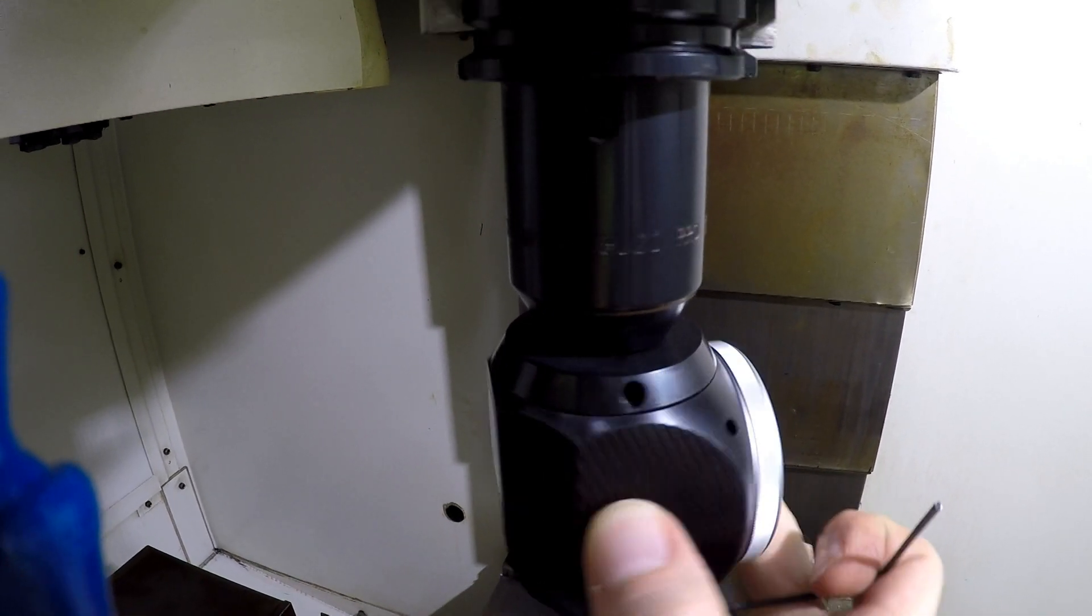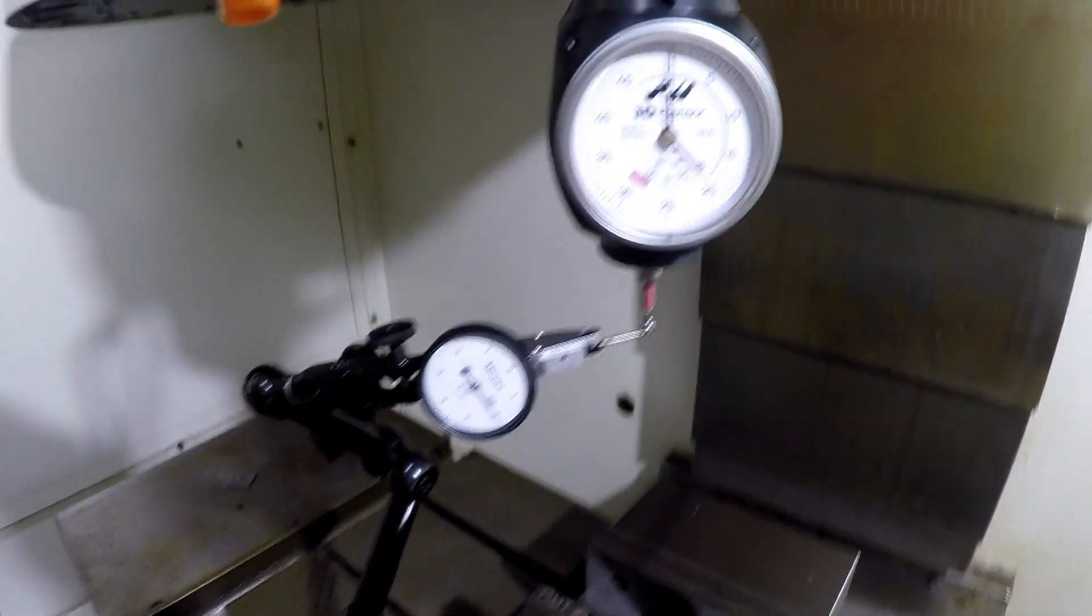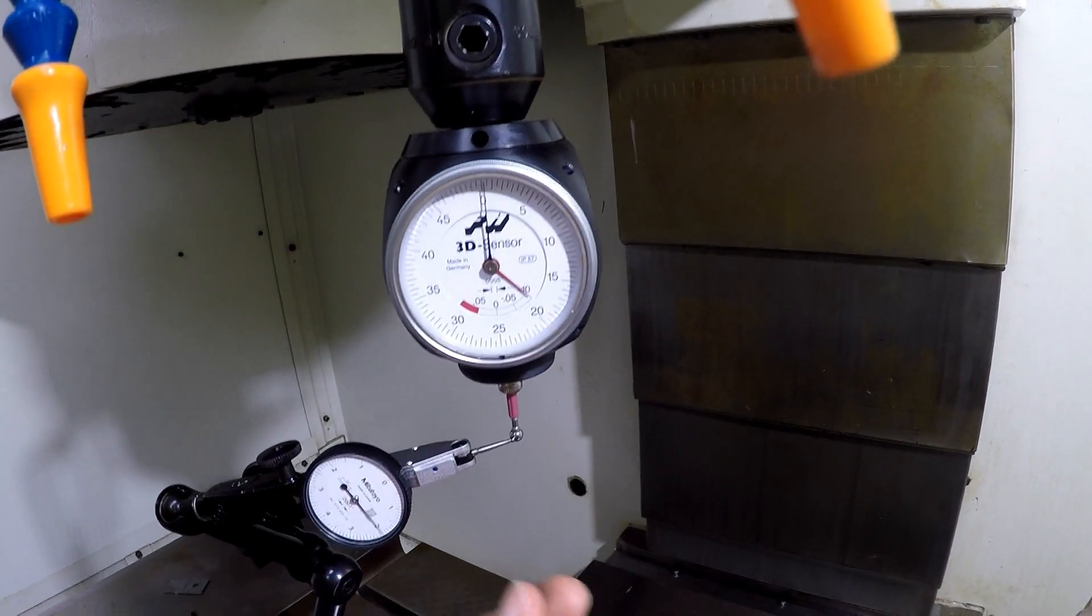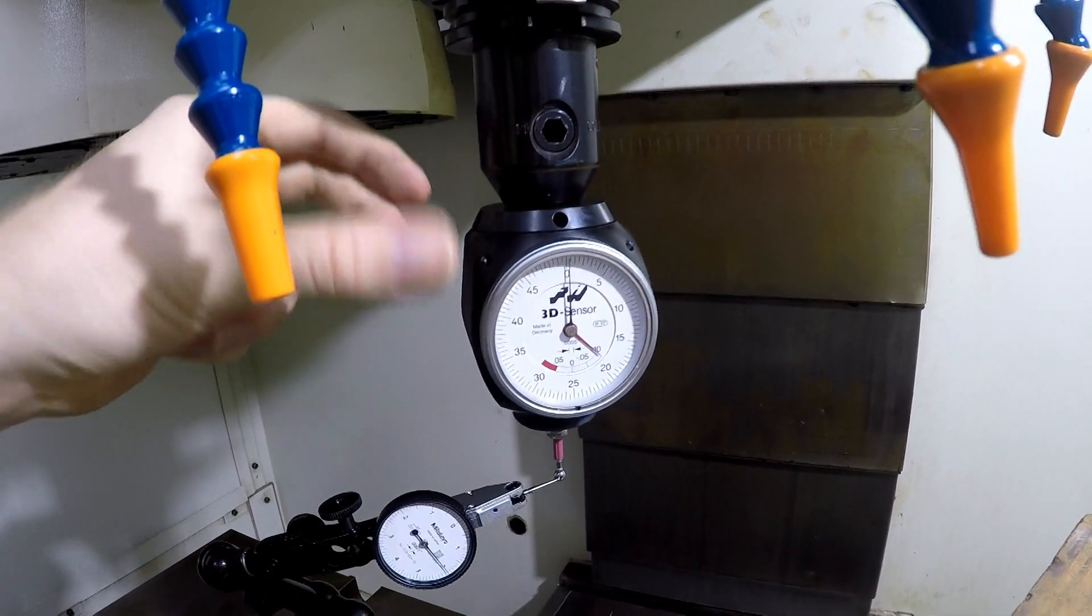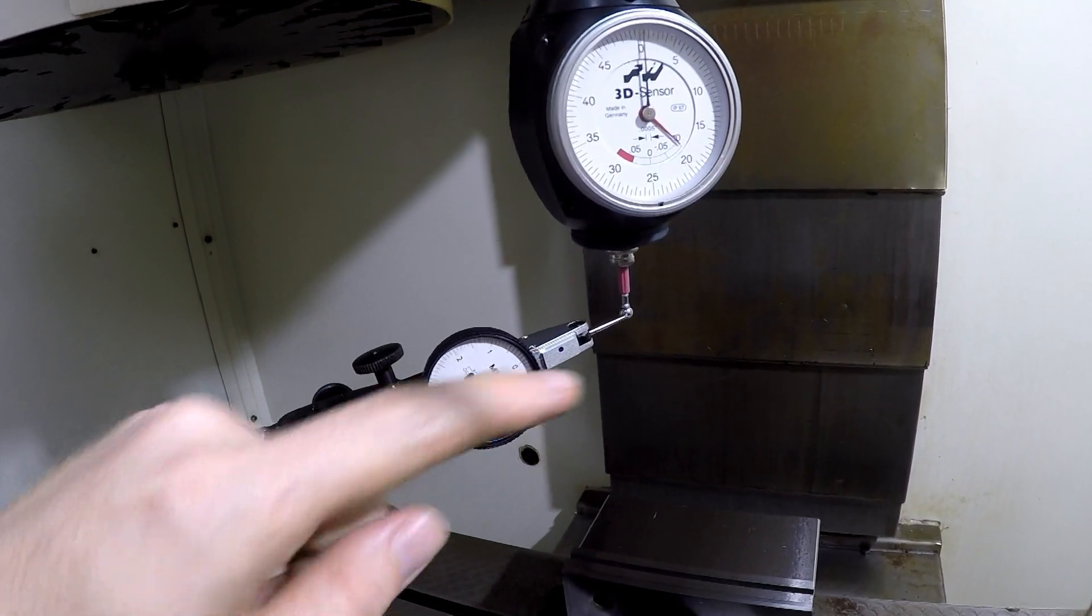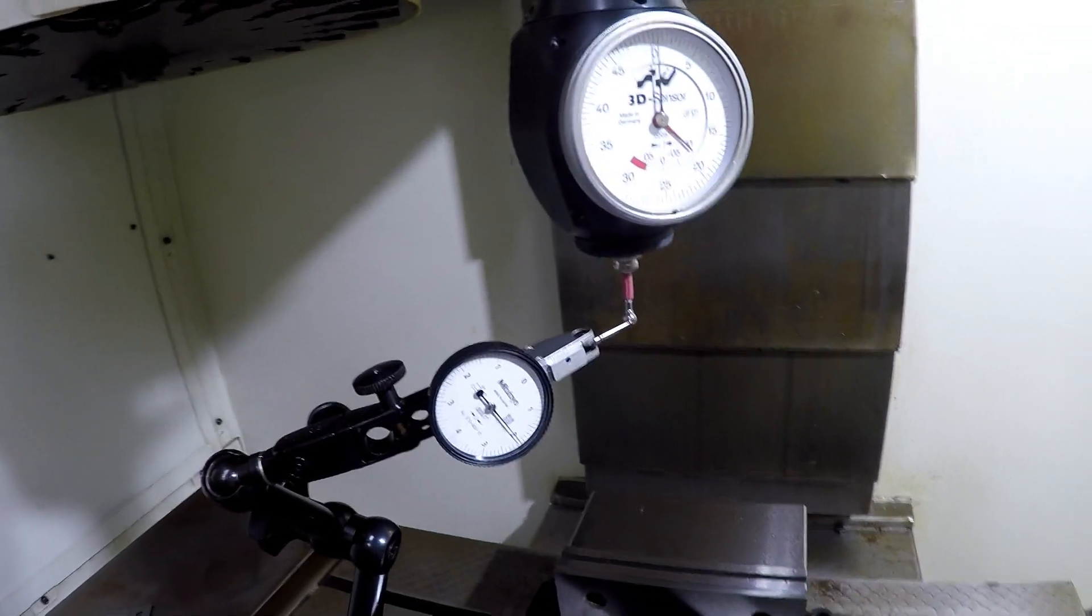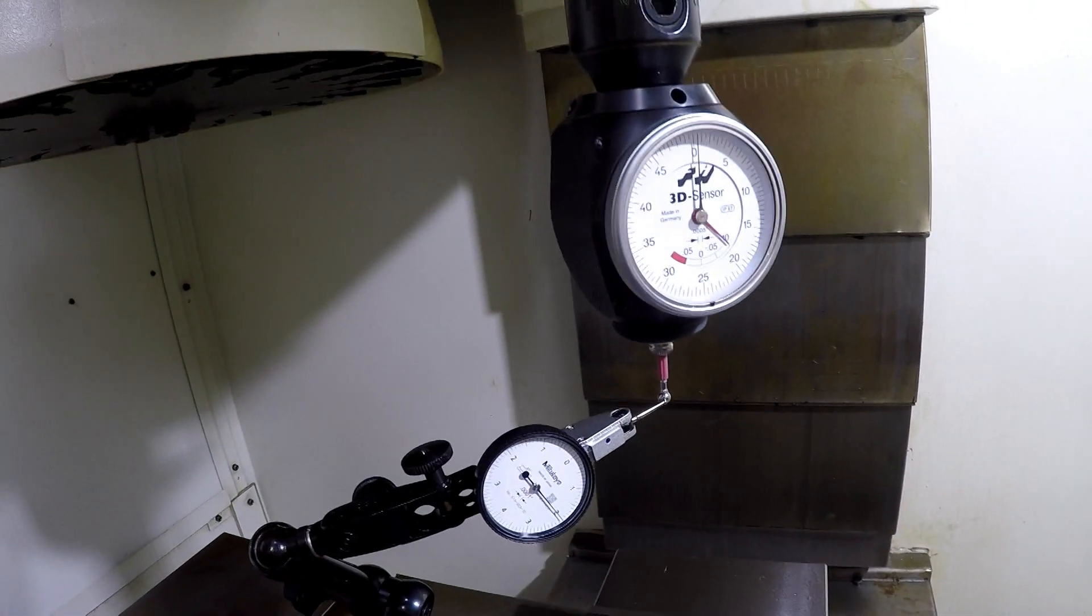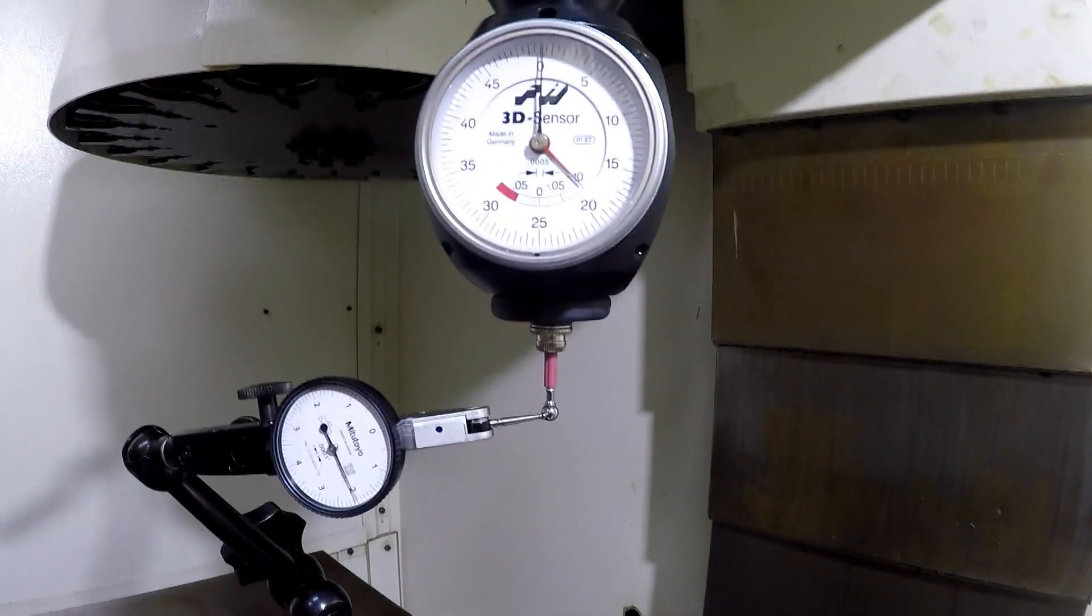So you loosen and tighten those. And that'll maneuver this guy to go back and forth or around. And just you keep loosening and tightening these to move it back and forth to get this to read zero as you spin it around. So I'll set you guys up and you guys can watch me fiddle around with this and see how long it takes me. So here we go.